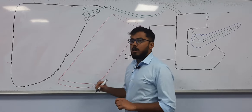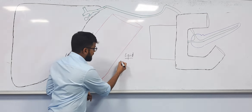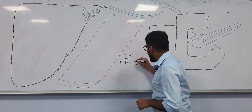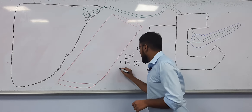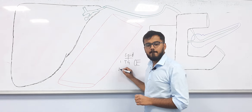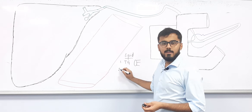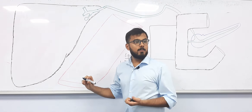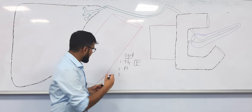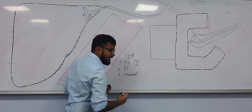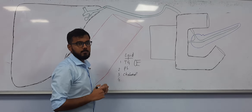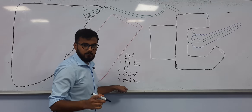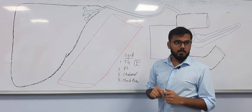The types of lipids are: first, triglyceride — it has a glycerol ring with three chains of fatty acids. Second, phospholipid. Third, cholesterol. And the fourth one is cholesterol ester. So these are the different types of lipids we have.